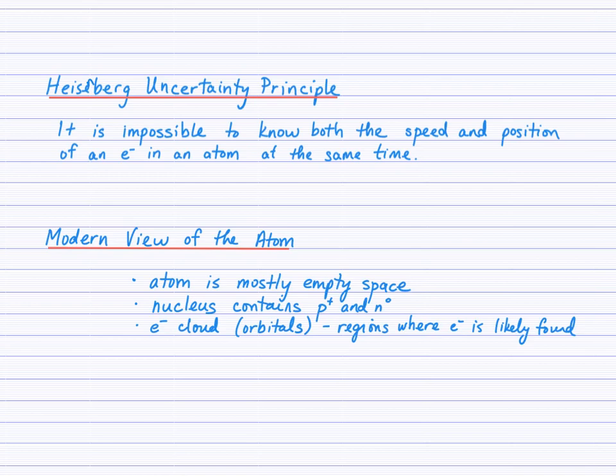But the analogy would be like trying to see that car in the alley, except the only way you have to see it is by setting off an explosion. And the explosion is so powerful that in the act of the explosion, it moves the car. And so you can't locate the car to see the color of it because the explosion caused the car to move. And that's what happens when we try to see electrons. The energy of the wave that we're trying to see them with causes them to move, and therefore we can't pinpoint them. And so this leads to the Heisenberg Uncertainty Principle.